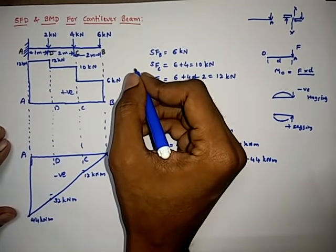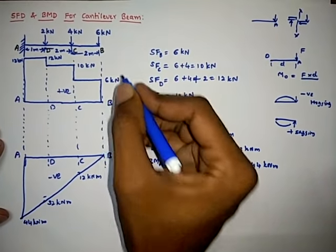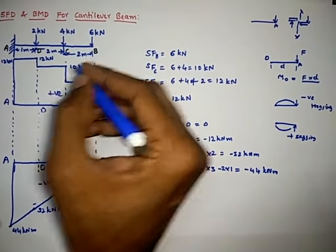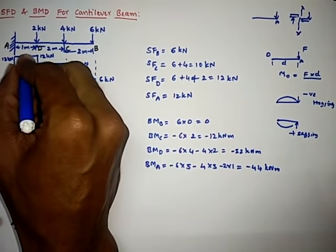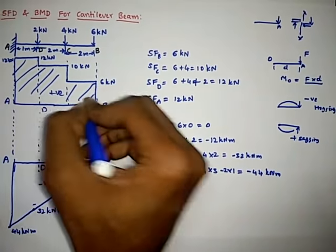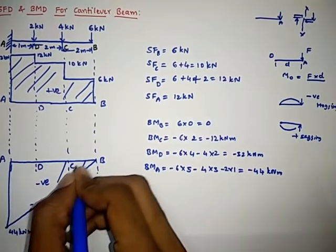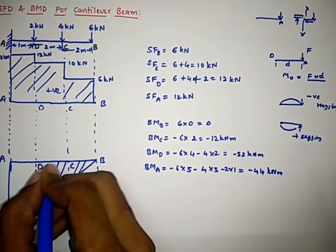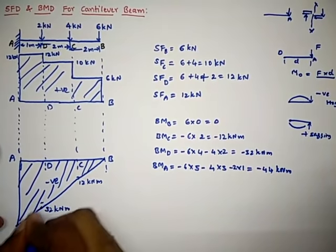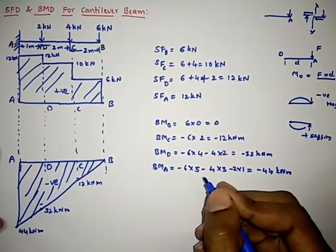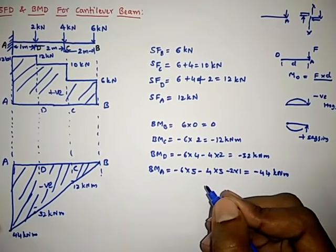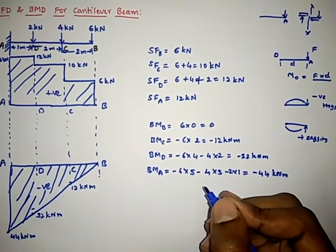This is how we draw the shear force and bending moment diagram for a cantilever beam with given point loads. The diagram can be hatched for a neater appearance. For more videos, please subscribe and activate the bell symbol. Thank you.